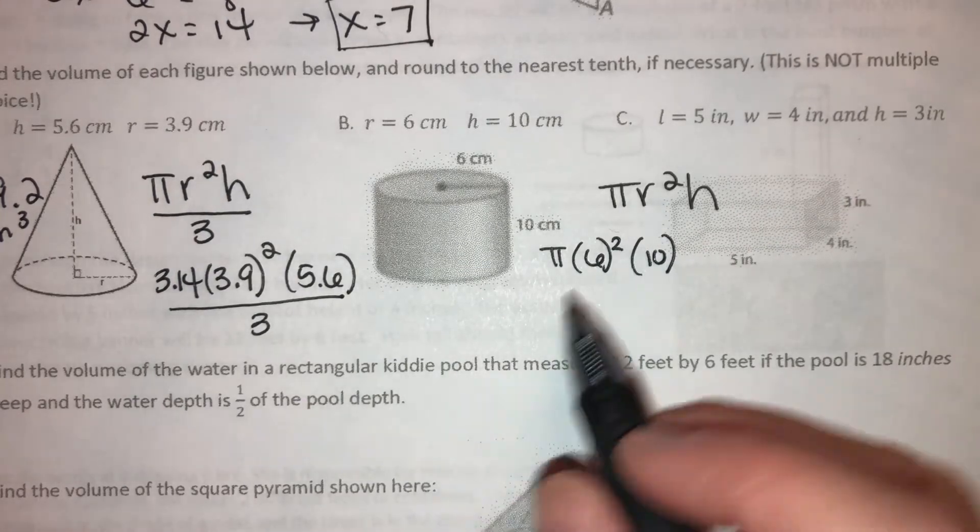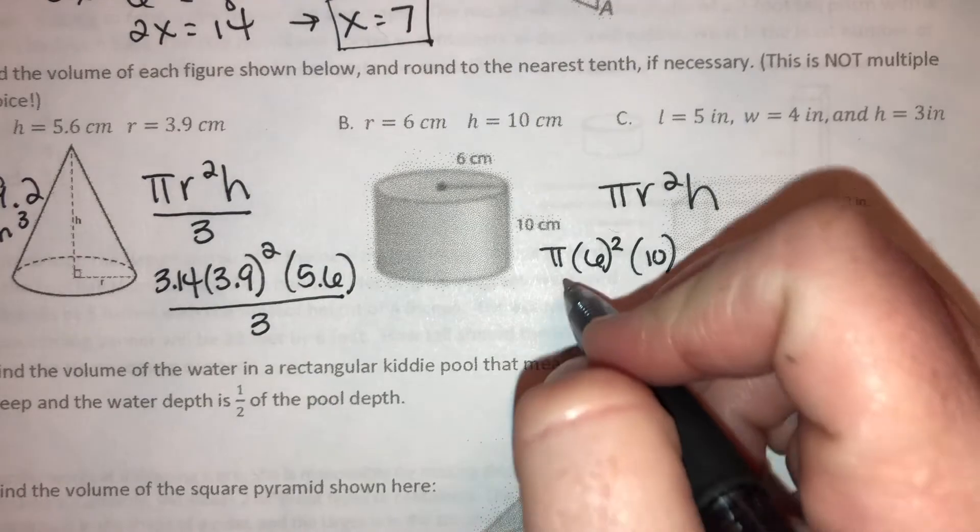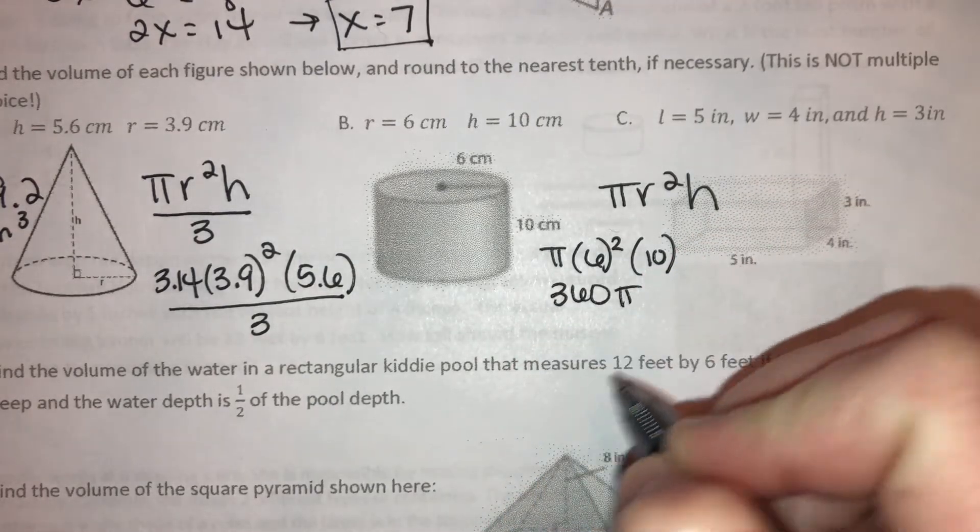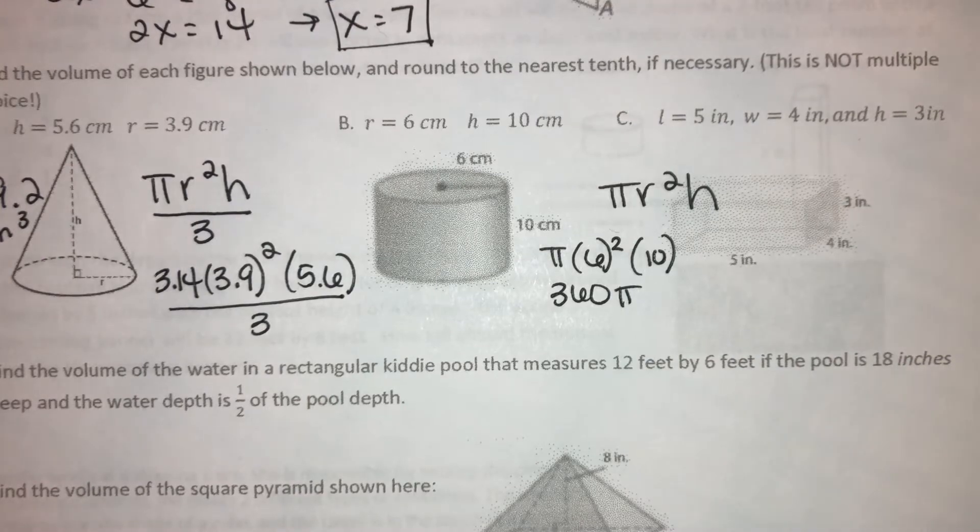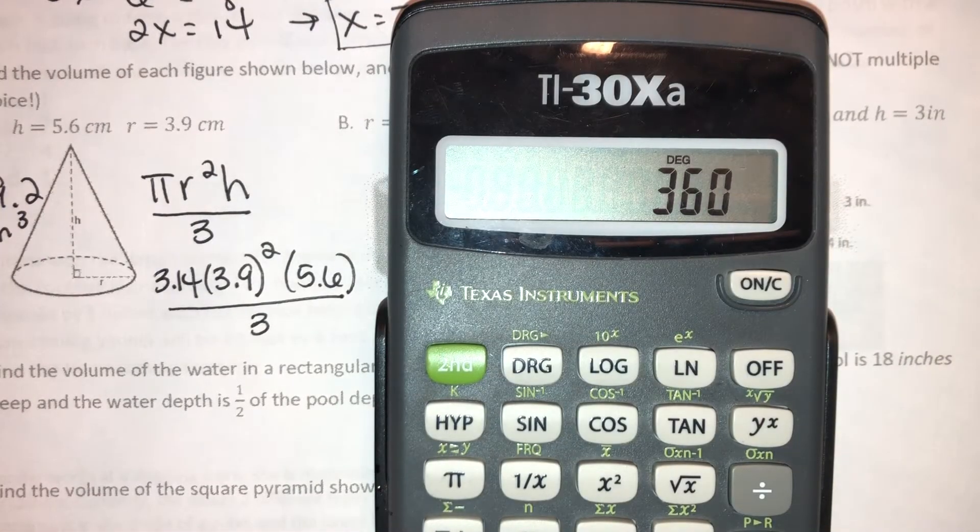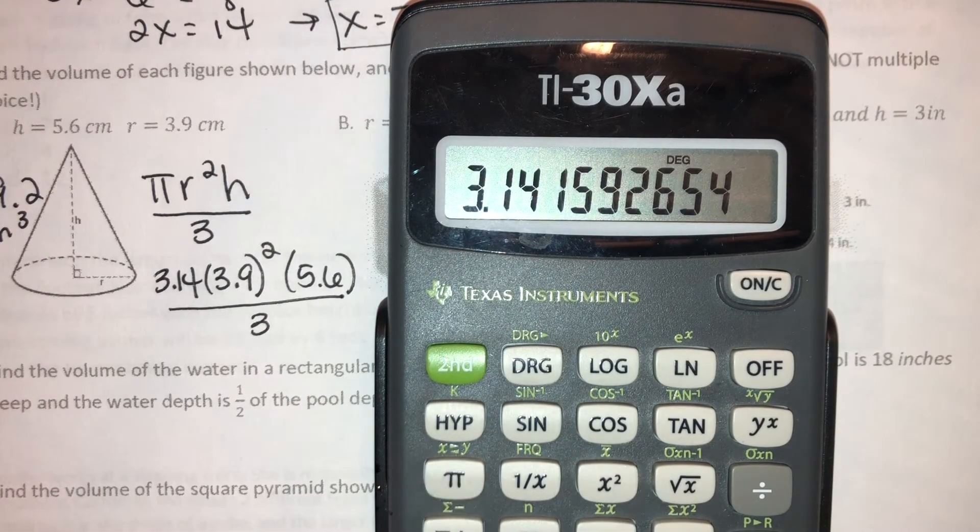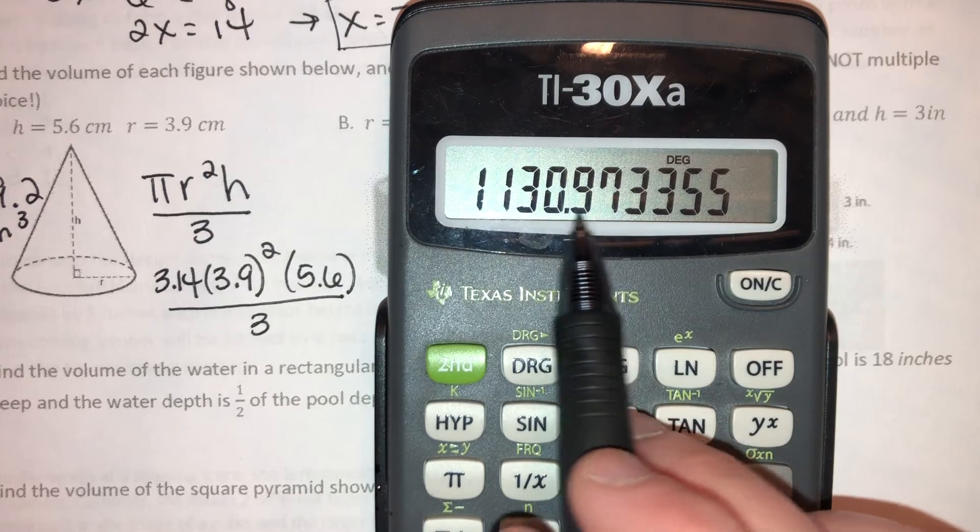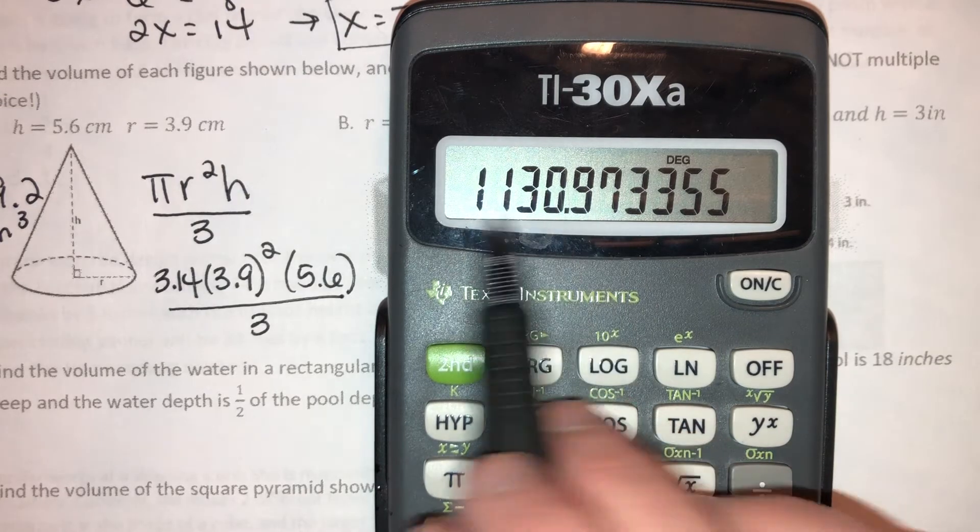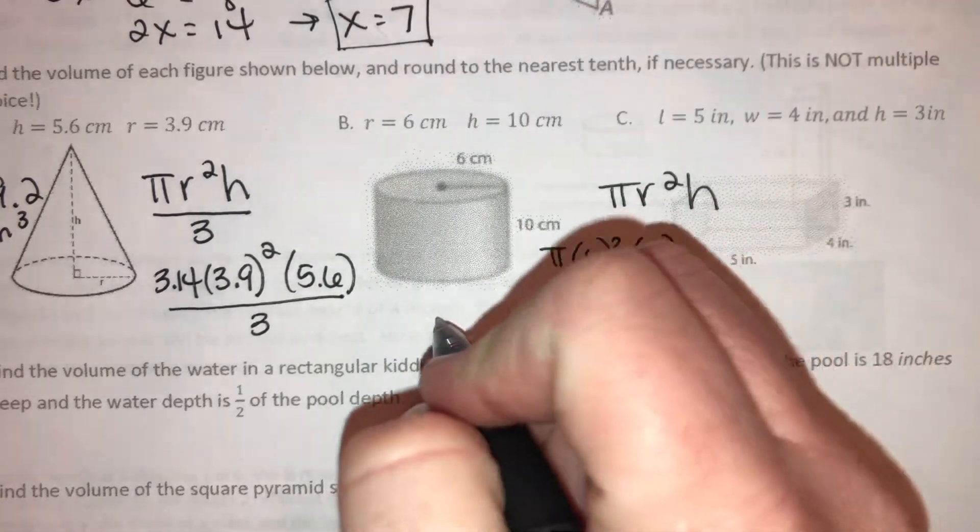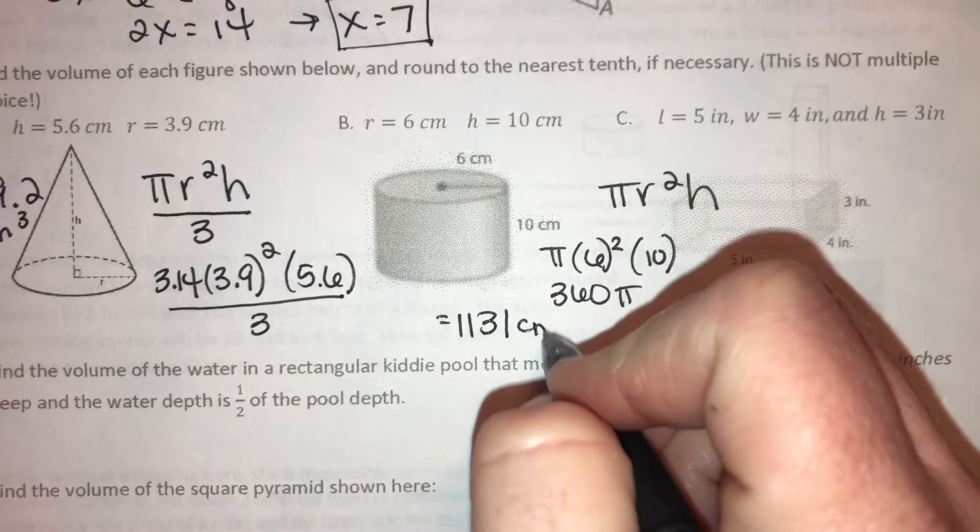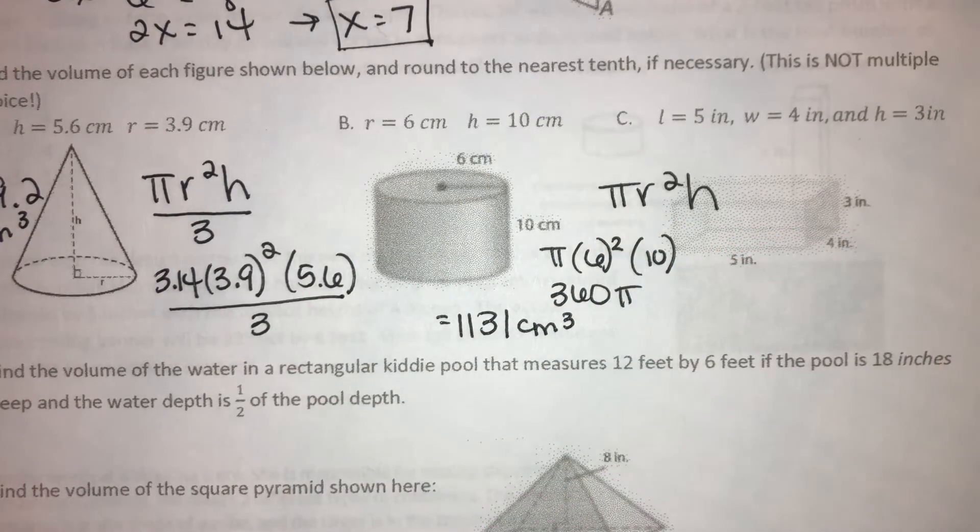All pi times 6 squared times 10. 6 squared is 36. 36 times 10 is 360. And then we wanna multiply that by pi. 360 times the pi button equals about 1130.97 blah blah blah. We're rounding to the nearest tenth, and that's gonna bump this to 1131. So it's about 1131. That's in centimeters. And then they're cubed since it's a 3D shape.